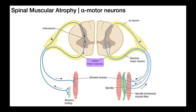The alpha motor neuron exits the spinal cord through the ventral root, goes into the spinal nerve, and can exit through the ventral ramus or dorsal ramus depending on the muscle. The whole point is that this motor neuron eventually goes out to the periphery and innervates some skeletal muscle.